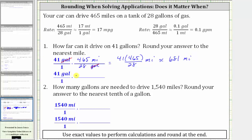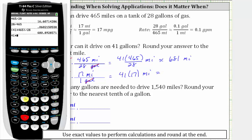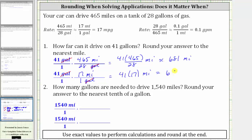Now let's do it the incorrect way, by using the rounded unit rate of 17 miles per one gallon. Notice how the units of gallons simplify out, leaving us with 41 times 17 miles. 41 times 17 is equal to 697 miles. This estimate is not the one we should use, because it has much more of an error. We should use the estimate of 681 miles, because we used the exact rate for the calculation.